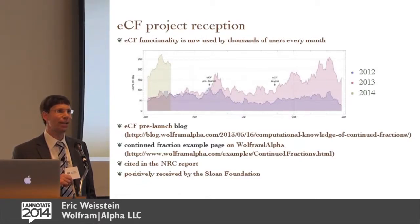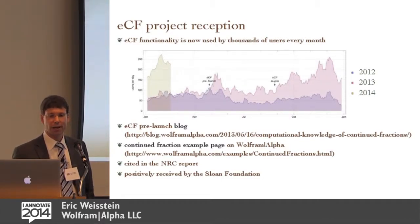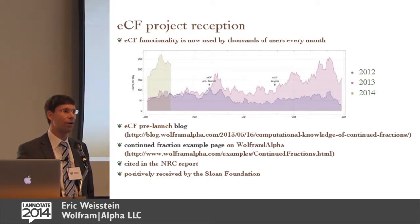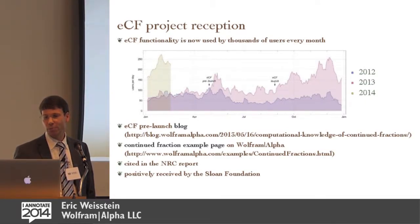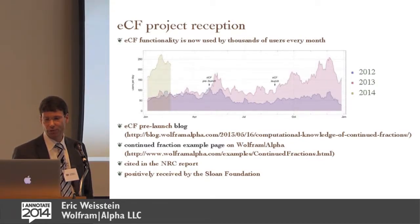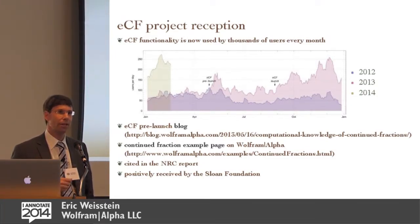The math community is not as big as many other communities. We can plot our statistics on Wolfram Alpha — three different colors showing years 2012 through 2014 — the number of continued fraction related queries on our site. The good news is this is a pretty obscure field, but people are using it; we're getting thousands of users of this functionality every month. We have a blog that shows many more nice examples, and an example page as well. This work was cited in the NRC report that recently came out.